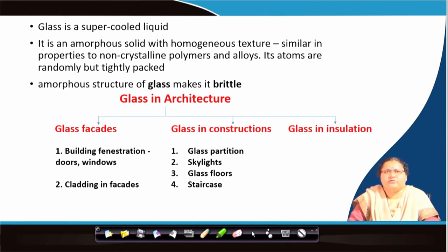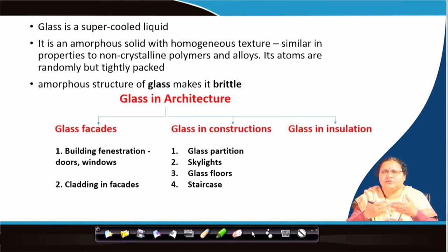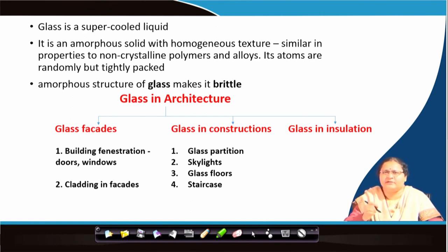Coming to the introduction — what is glass? It is a super-cooled liquid, amorphous in form. It does not form crystals, but even then it has randomly and tightly packed atoms, and that structure makes it brittle. It can break because the bonding of a crystalline structure does not take place, and it is homogeneous in texture. As it is transparent, any kind of impurity in it would be visible. If there is an air bubble entrapped while the glass is being made, it will be visible.